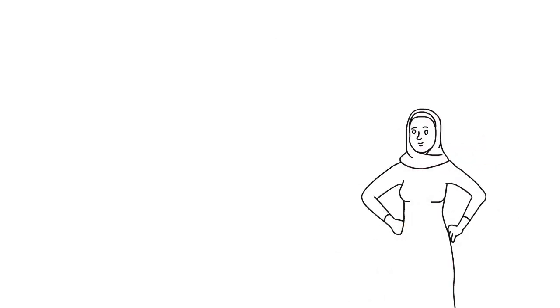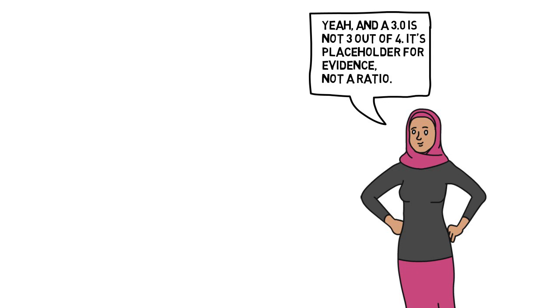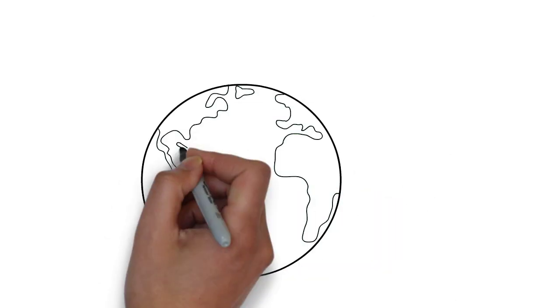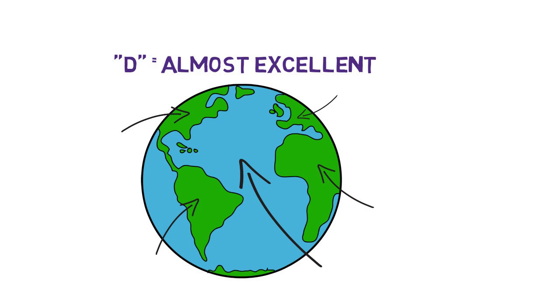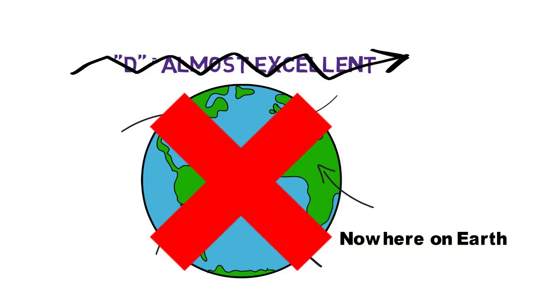A 3.0 on a 4.0 scale is considered 75 percent, and that's a D in many schools. A D grade doesn't mean almost excellent anywhere on earth as is most commonly associated with a 3 on a 4.0 scale.